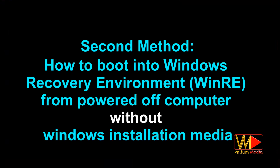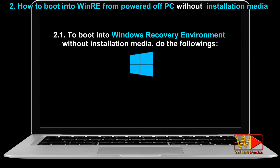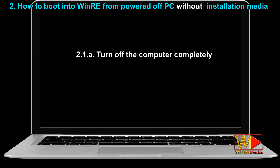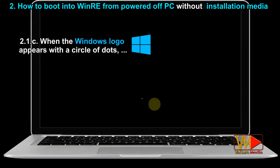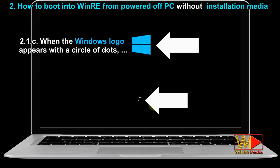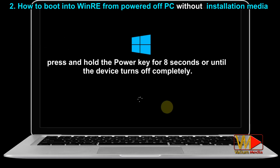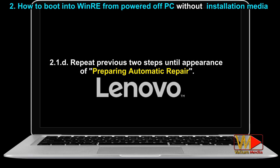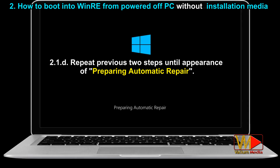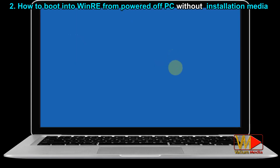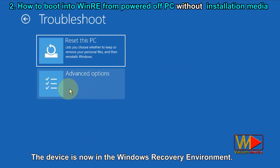Second method: how to boot into Windows Recovery Environment from a powered-off computer without Windows installation media. Do the following: turn off the computer completely, turn it on again, and when the Windows logo appears with a circle of dots, press and hold the power key for 8 seconds or until the device turns off completely. Repeat these two steps until you see 'Preparing Automatic Repair.' The device is now in the Windows Recovery Environment.